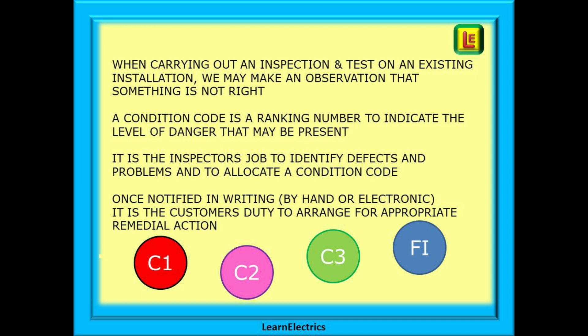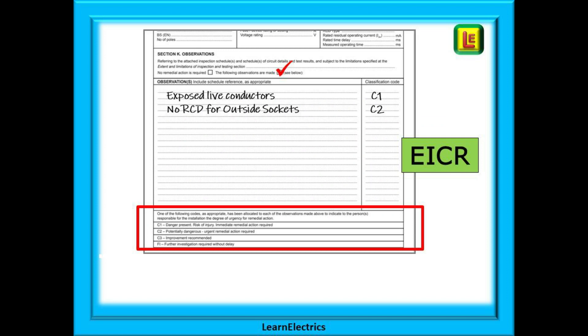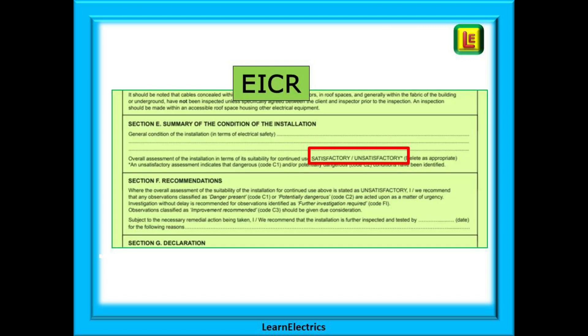Once notified of the observations in writing, either by hand or electronic, it is the customer's duty to arrange for appropriate remedial action. On the EICR reporting sheet you will record any observations and allocate to them a code number that indicates in your opinion the level of danger of electric shock or risk of fire. You will then make a recommendation: is the installation in a satisfactory condition and deemed safe for continued use, or is the installation unsatisfactory because one or more safety issues have been observed?